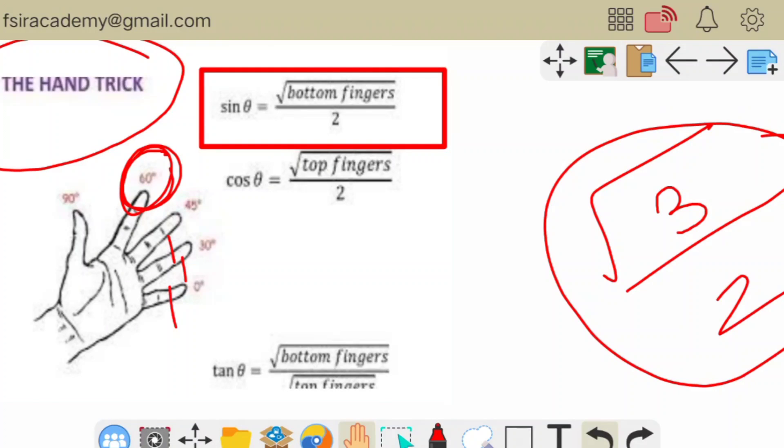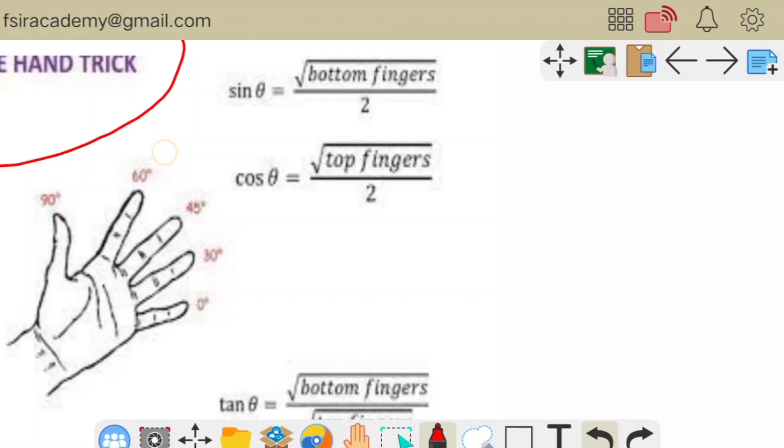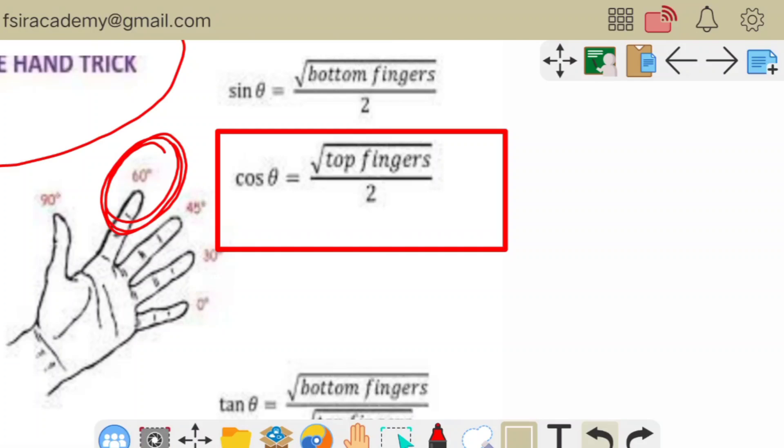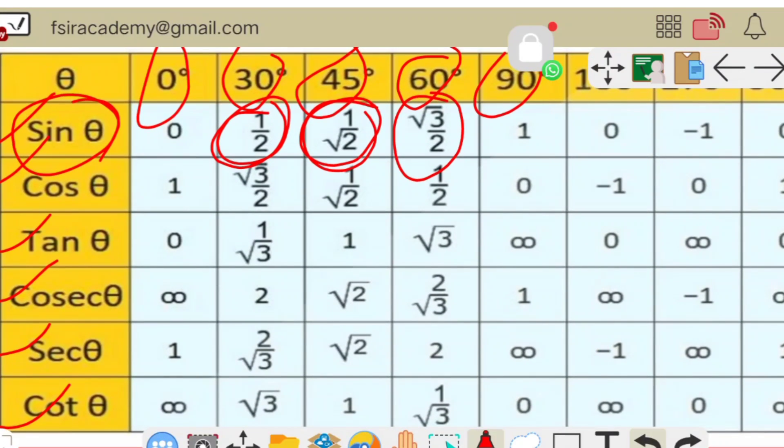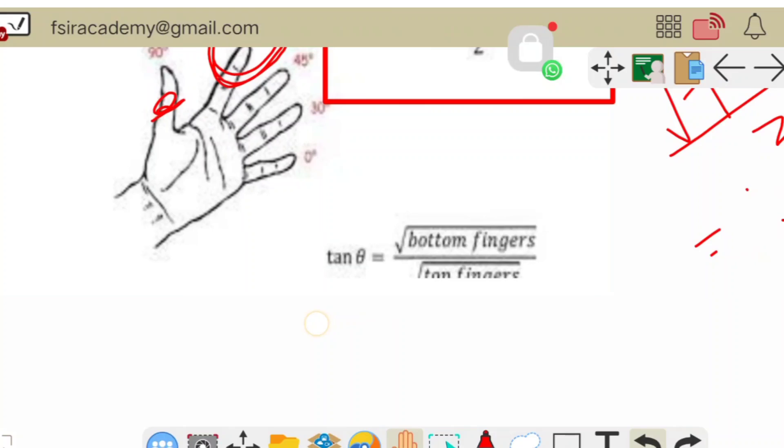Let's see, we have to find out the value of cosine 60 degree. So cosine 60 degree, the formula is before you: cosine theta equal to root of top finger divided by two. So as we are finding the value of cosine 60 degree, top finger for 60 degree has one finger, so root one divided by two. So cosine 60 degree equal to one by two. We can check from the table, cosine 60 degree equal to one by two. In this way you can find the value of cosine 0 degree, cosine 30 degree, cosine 45 degree, cosine 60 degree, cosine 90 degree.